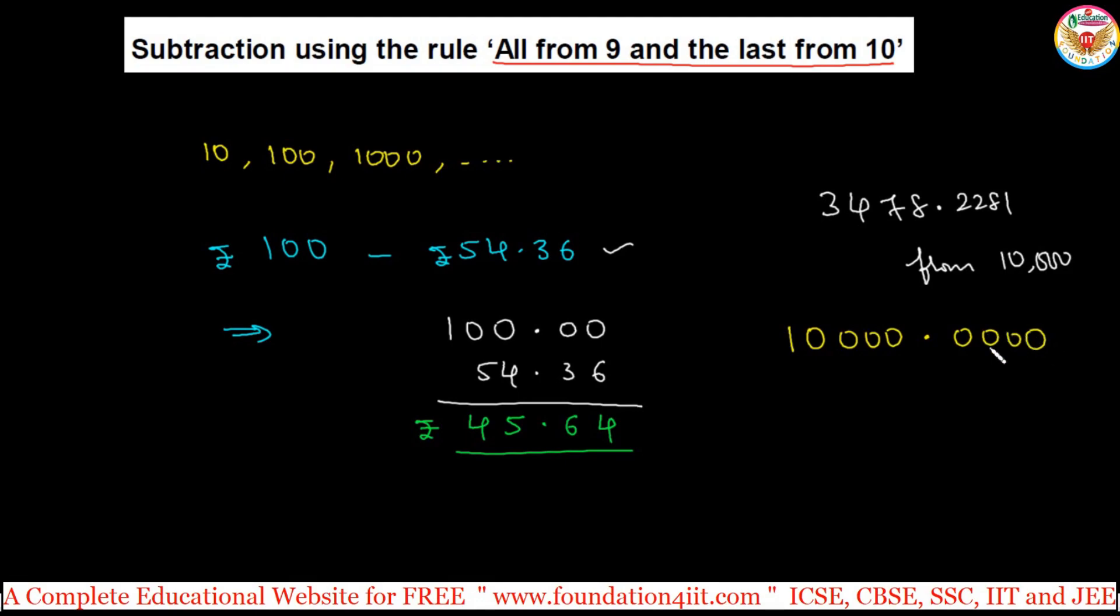This is just for writing to show the steps. In mind, without writing also, by seeing this number only we can see the answer. So meanwhile I am just showing 3478, 3478 point again 2281.